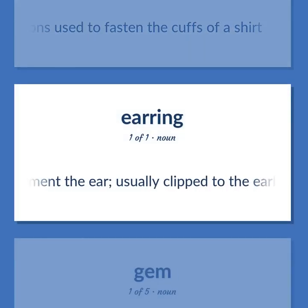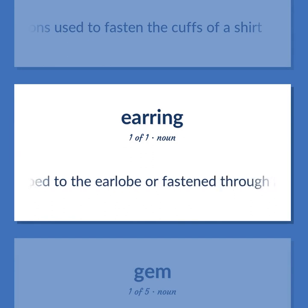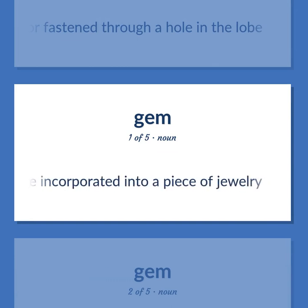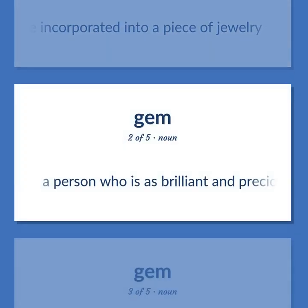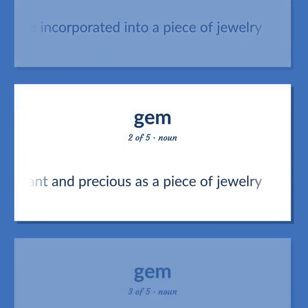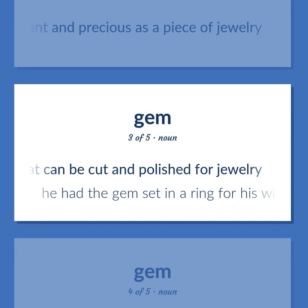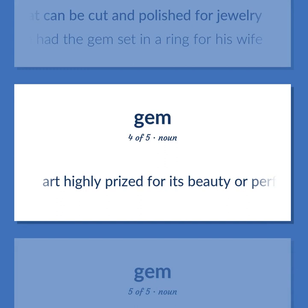Jewelry to ornament the ear, usually clipped to the earlobe or fastened through a hole in the lobe. A precious or semi-precious stone incorporated into a piece of jewelry. A person who is as brilliant and precious as a piece of jewelry. A crystalline rock that can be cut and polished for jewelry. He had the gem set in a ring for his wife. Art highly prized for its beauty or perfection.